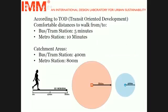For evaluating accessibility, we borrowed some concepts from TOD methodology — transit-oriented development. Based on TOD, the convenient distance from a bus and tram station is 5 minutes, and the convenient distance from a metro station corresponds to 10 minutes of walking. This means you use a bus or tram station if it's 5 minutes from you, and a metro station if it's located 10 minutes from you.